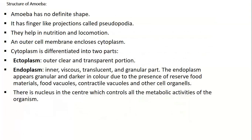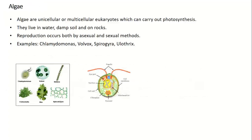Amoeba has no definite shape. It has finger-like projections called pseudopodia, which help in nutrition and locomotion. An outer cell membrane encloses the cytoplasm. Cytoplasm is differentiated into two parts: ectoplasm — the outer, clear, transparent portion — and endoplasm — the inner, viscous, translucent, and granular part. The endoplasm appears granular and darker in color due to the presence of reserve food materials, food vacuoles, contractile vacuoles, and other cell organelles. There is a nucleus at the center, which controls all the metabolic activities of the organism.